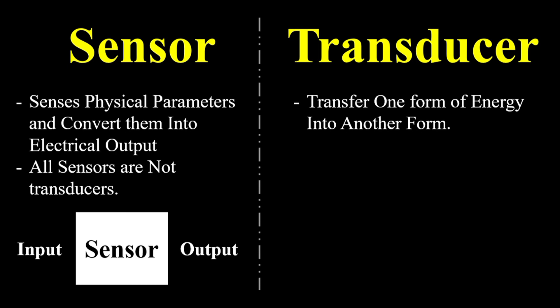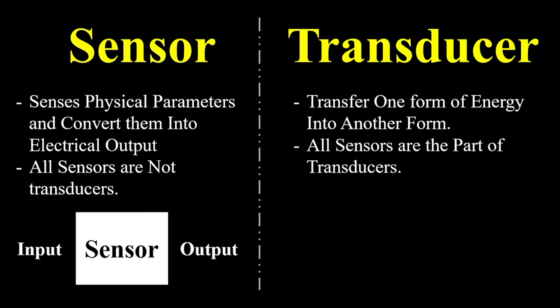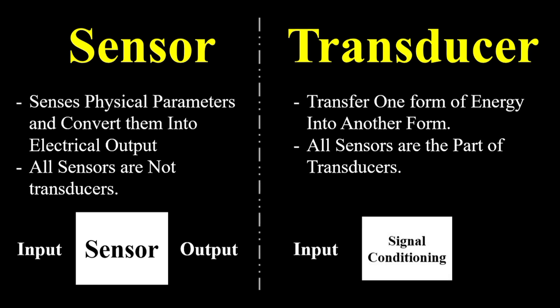But whereas, we can say that all sensors are part of a transducer. Again the question is how? As we have seen the block diagram of a transducer — it includes some input quantity which is going to be measured or converted, next is the signal conditioning, and in signal conditioning, the transducer uses some devices to convert one form of energy into another and then give us the output required by the next applications.